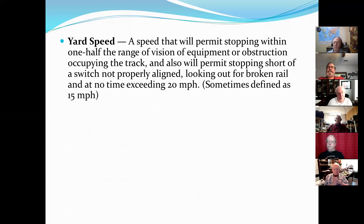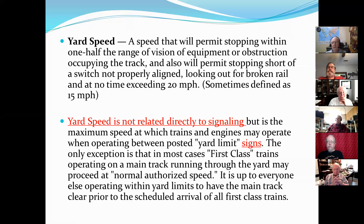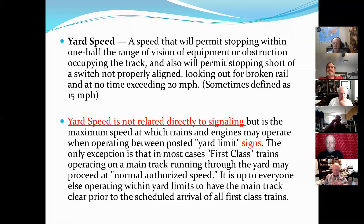It's half the range of vision because if there's a train coming in the other direction, you both have to have time to stop. So you only have half the visual distance to stop. When you're at yard speed looking ahead, you have to make sure you can stop in half the distance in case you're faced with an oncoming train. Yard speed is not related directly to a signal — it's a sign. But there's one exception: a first class train. There's usually a route through a yard where a first class train can maintain normal speed, and it's everybody else's responsibility to clear that rail.